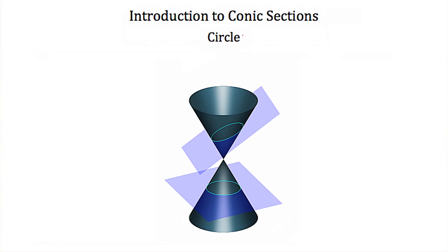The first type of conic section we're going to talk about is the circle. Imagine that this double cone had a line passing through the center — we could see the axis of these two double cones. Now if the plane we used to cut our cone was perpendicular to this axis, then the shape formed from the intersection of these two objects would be a circle. If we looked straight onto this cutting plane or straight down through the two cones, we could see where they intersect is a circle.